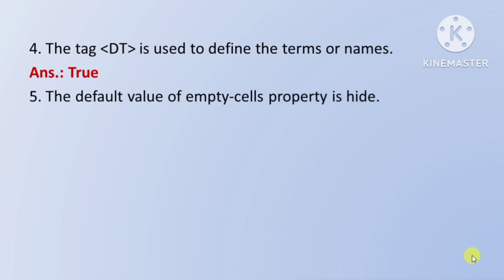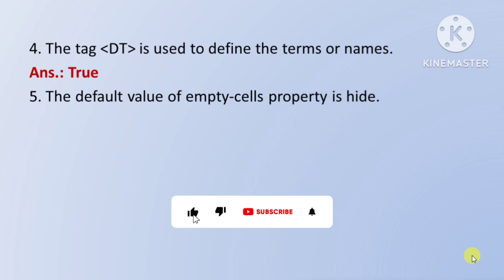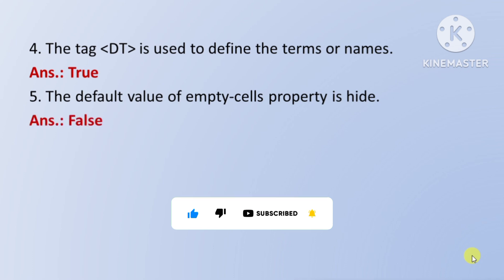Next question: the default value of the empty-cells property is hide — empty-cells property ki default value hide hoti hai. Toh yeh false hai, kyunki is ki default value hoti hai show.